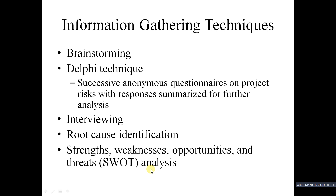Diagramming techniques include cause and effect diagrams, also called fishbone diagrams, flowcharts, and influence diagrams. As seen in project quality management, the fishbone diagram helps trace problems back to their roots. Flowcharts show how different parts of a system interrelate. Influence diagrams represent decision problems by displaying essential elements including decisions, uncertainties, causality, and objectives, and how they influence each other.